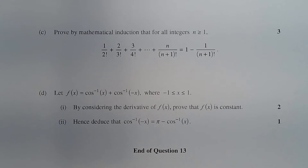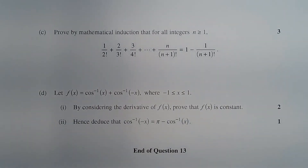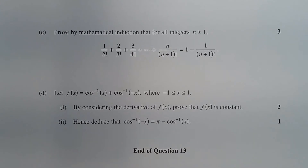Question 13c. Prove by mathematical induction that for all integers n greater than or equal to 1: 1 over 2 factorial plus 2 over 3 factorial plus 3 over 4 factorial plus dot dot dot plus n over n plus 1 factorial equals 1 minus 1 over n plus 1 factorial.